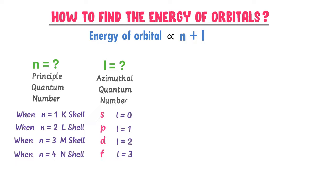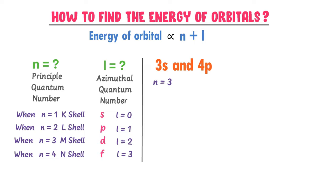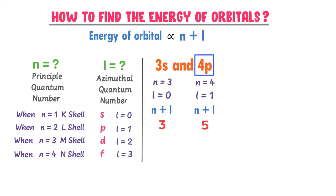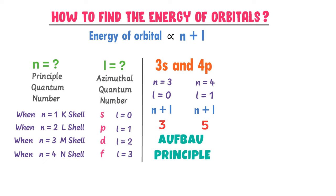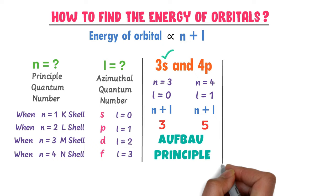Now consider 3s and 4p — which orbital has more energy? In case of 3s, n equals 3 and for s, l equals 0. So n plus l equals 3 plus 0, which gives 3. In case of 4p, n equals 4 and for p, l equals 1. So n plus l equals 4 plus 1, which gives 5. Thus, 4p has more energy than 3s, because the n plus l value of 4p is greater. Therefore, according to the Aufbau principle, electrons will firstly fill the 3s orbital due to its lower energy.